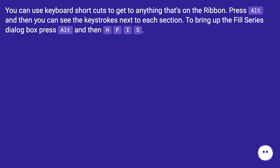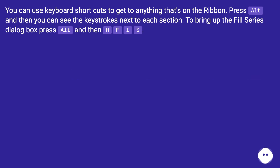You can use keyboard shortcuts to get to anything that's on the ribbon. Press Alt and then you can see the keystrokes next to each section. To bring up the Fill Series dialog box, press Alt and then H, F, I, S.